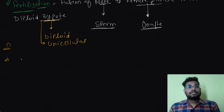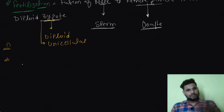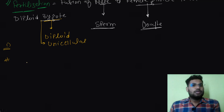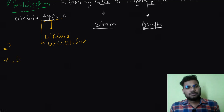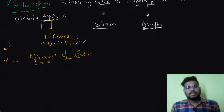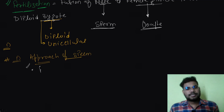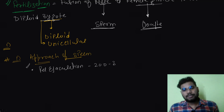The first step in fertilization is the approach of the sperm — how the sperm reaches the ovum. We need to understand what factors help the sperm reach the ovum and what barriers the sperm faces. Per ejaculation, for a healthy ejaculation, there are around 200 to 300 million sperms.